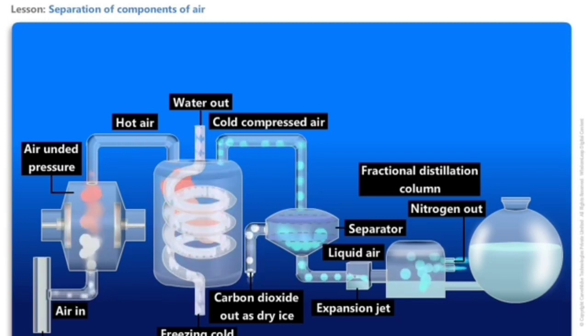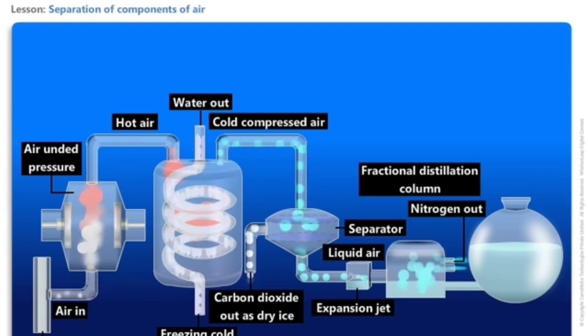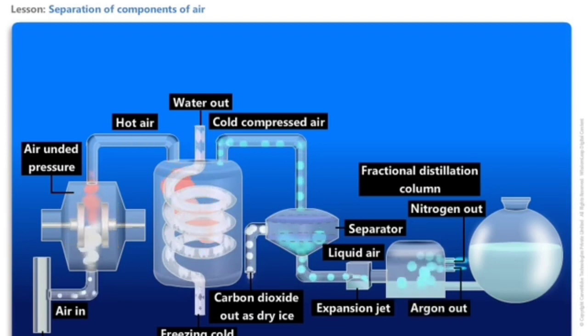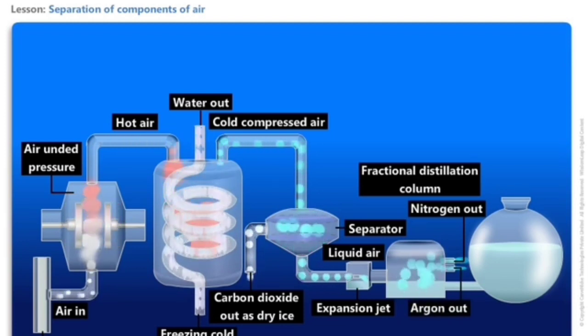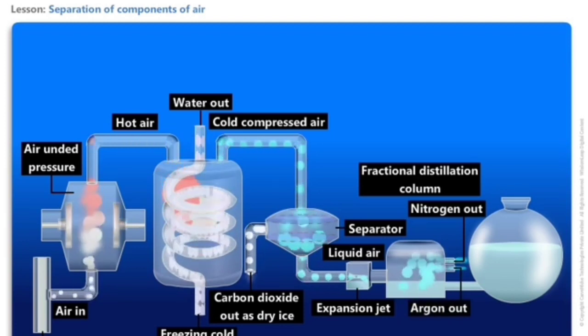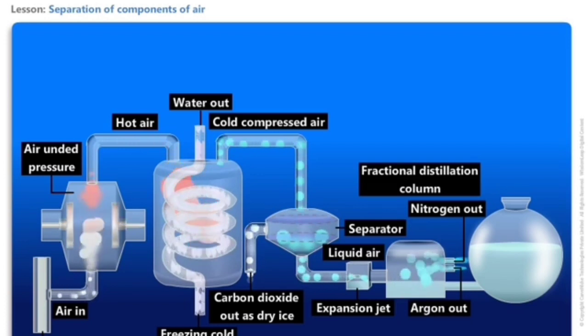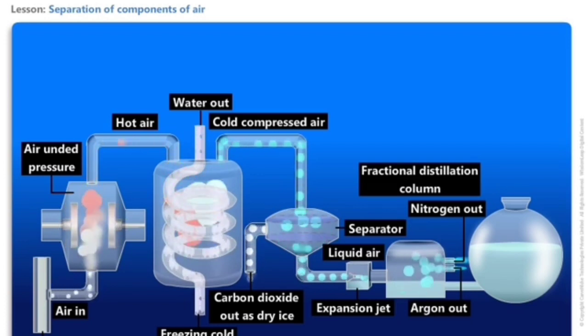Nitrogen first boils at minus 196 degrees Celsius and is separated. Oxygen, which boils at minus 186 degrees Celsius, is then collected. Oxygen, having the higher boiling point, is left behind and collected separately.